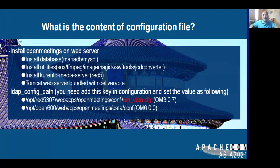What is the content of the configuration file? This configuration file is pivotal for the integration and is installed with OpenMeetings in the default path. You need to install the database, install utilities, install media server or Red5. The Tomcat web server is bundled with the deliverable so you don't need to install it separately. Keep in mind there is one important key you need to add: ldap_config_path. For different OpenMeetings versions — OM3 versus OM6 — you need to set slightly different paths.